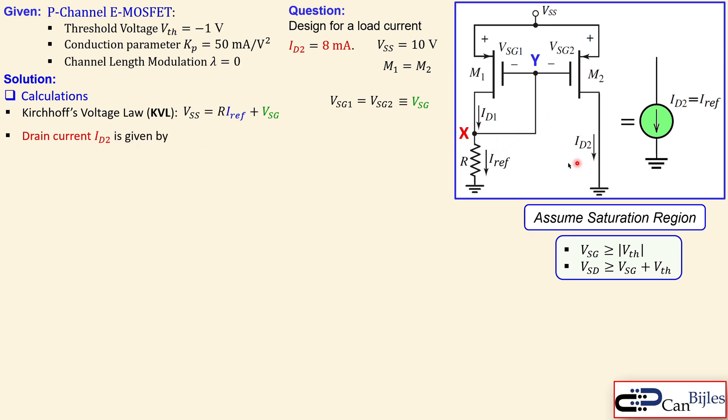The drain current ID2, which is the load current, is given by the P-channel transistor formula with Kp as the conduction parameter. When we rewrite this, divide by Kp and take the square root, you get two solutions plus and minus. Now express VSG in terms of the other parameters. Substituting the values of ID2 equals 8mA and Kp equals 50mA per square volts and minus VTH equals plus 1, the two solutions are 1.4 volts and 0.6 volts.